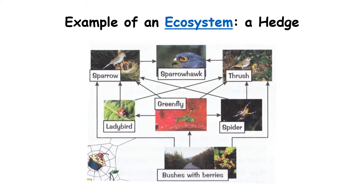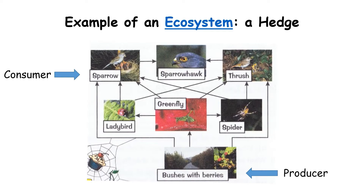An example of an ecosystem is a hedge, and here you can see the food web for a hedge. We've got the producers — that's the bush bearing the berries — and then every other thing on this food web is a consumer. Decomposers would be things like fungi and bacteria that are eating the dead things within this food web.